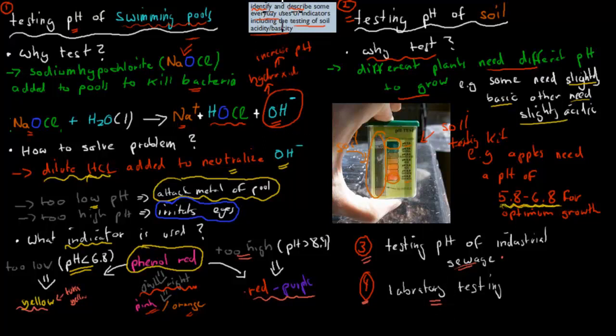So I'll go over the whole point. It says identify and describe some everyday uses. So identify was just naming. So testing pH of a swimming pool, testing pH of soil, testing pH of industrial sewage, and laboratory testing. That was our identification part. And describe was the other part. So why do we do it? What happens? The actual formula where you have sodium hypochlorite releasing these hydroxide ions, and the hydroxide ions make it more basic. And then what kind of indicators we might use, like phenyl red for the swimming pools. That's the description part. So you should know all that for this dot point.